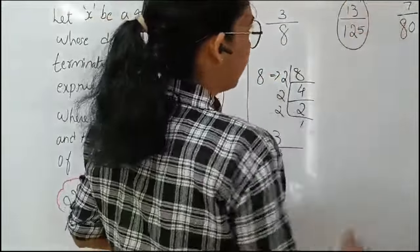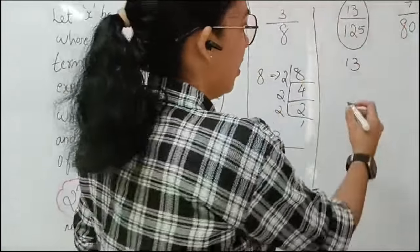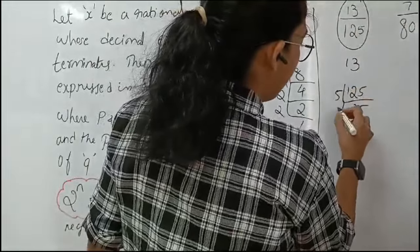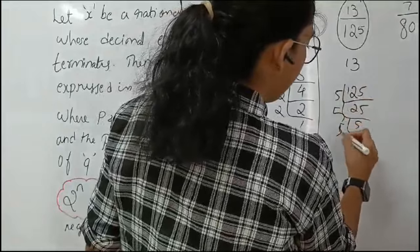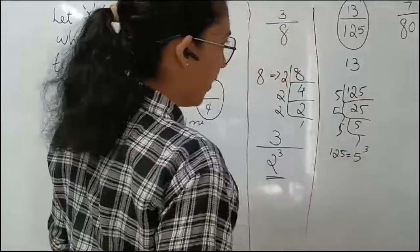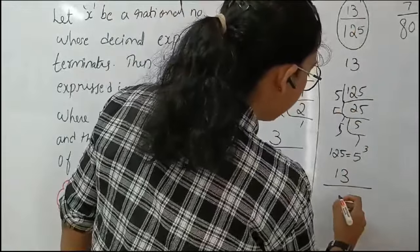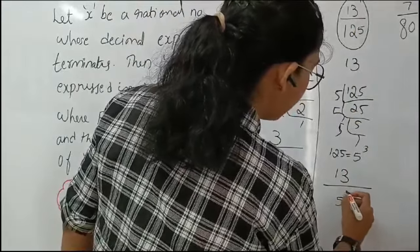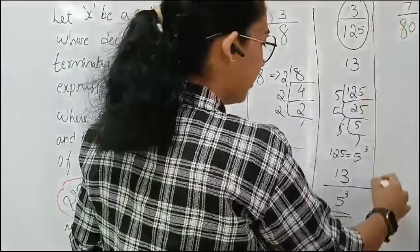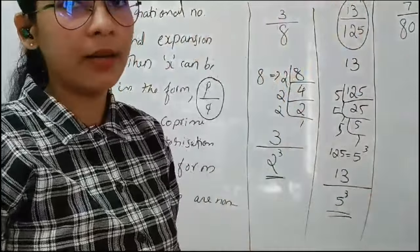Next is 13 by 125. We know that 13 is a prime number, and on factorization 125 can be written as 5 to the power 3. So as per this theorem, it can be written as 13 divided by 5 to the power 3. On checking, the decimal expansion of this rational number will be terminating.